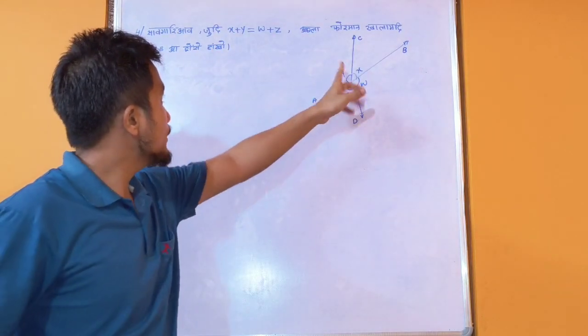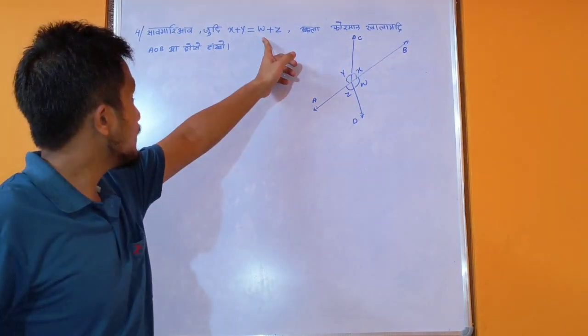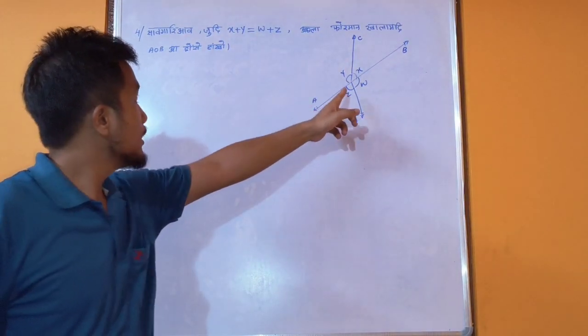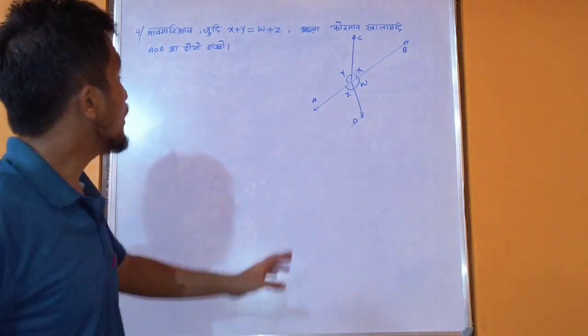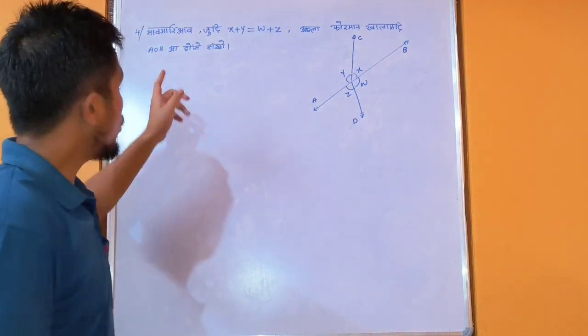x plus y, it is w plus z. W plus z means we are working in AOB.